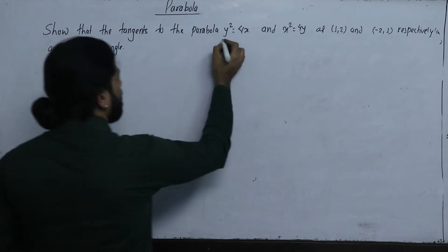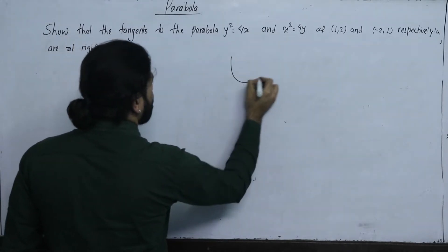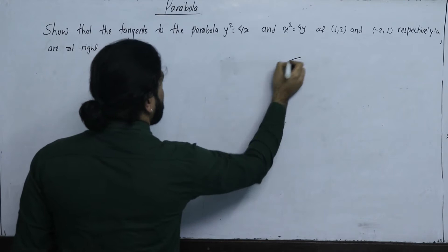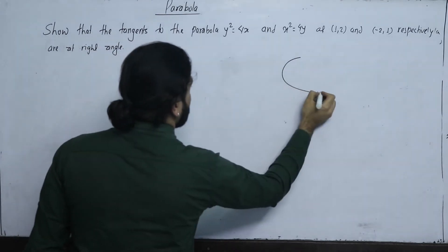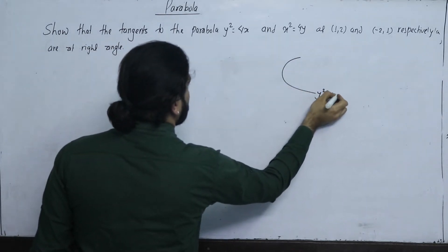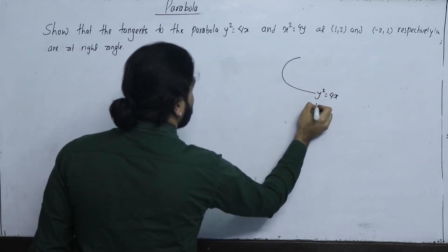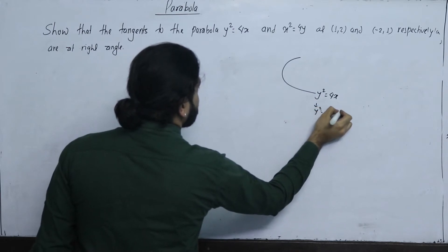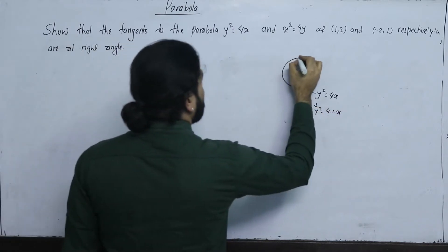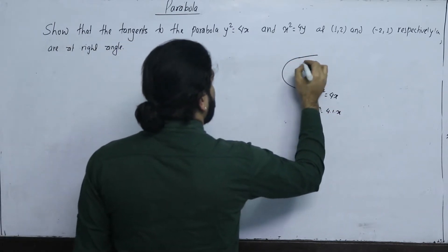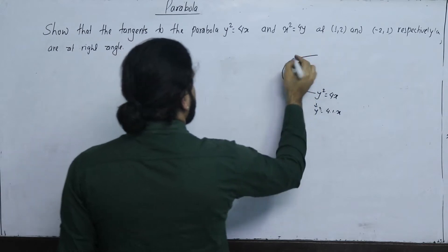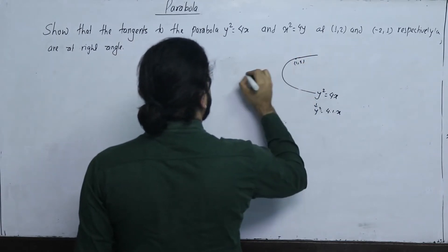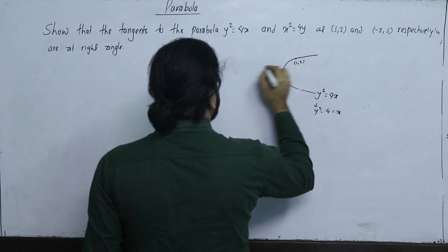Consider the parabola y² = 4x, which is y² = 4 × 1 × x. This is the tangent at the point (1,2).